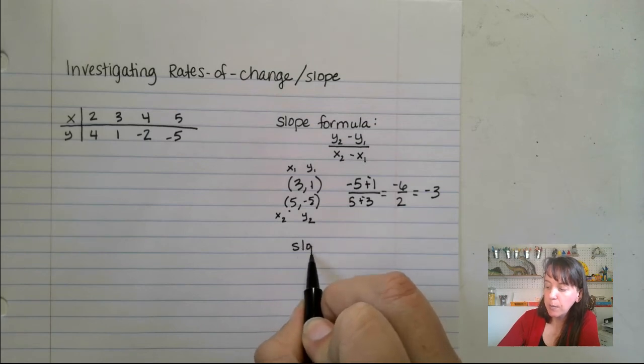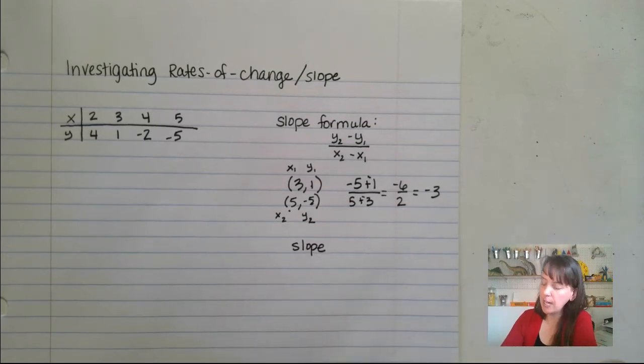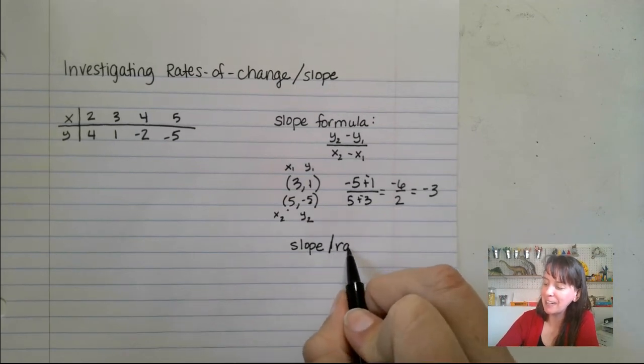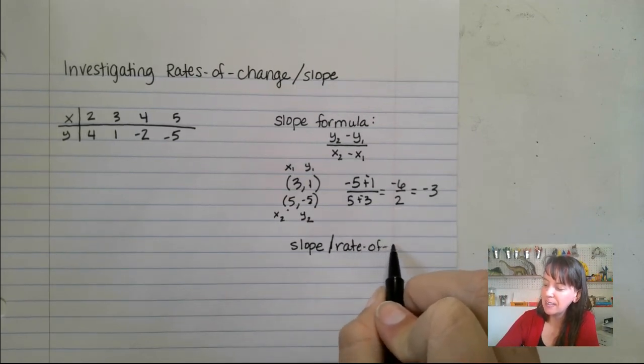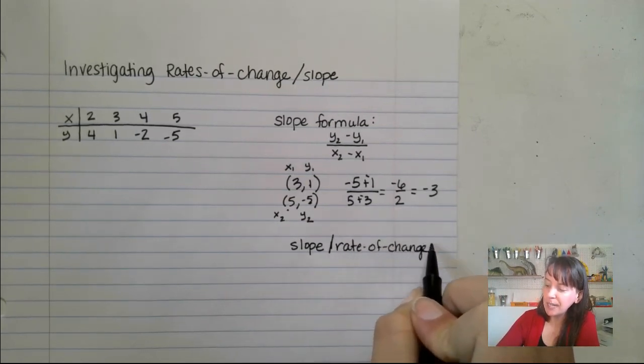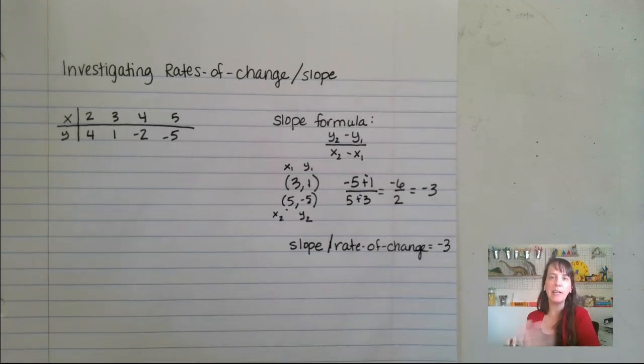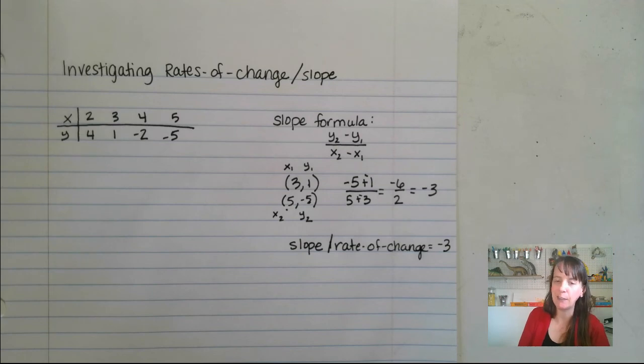So my slope, aka my rate of change, is going to be -3 for this guy. That means anywhere in there, it's going to change by -3.